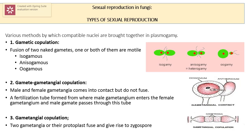Sexual reproduction can occur by gametic copulation. In the lower fungi categories, male and female gametes may be morphologically similar, categorized as isogametic copulation. When both gametes are dissimilar, it is called anisogamy or heterogamy. If one of the gametes is motile — either female or male — this type of copulation is oogamy.